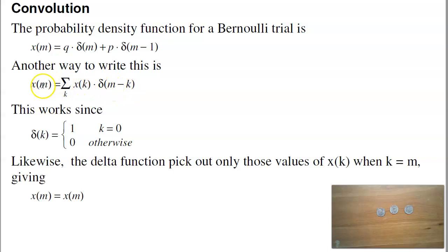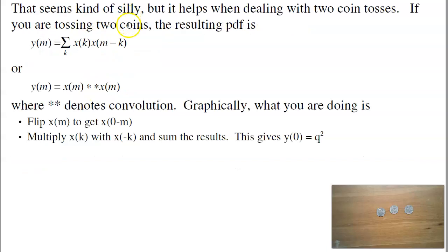The point behind that, though, is if I change that delta function to something else, I can now say what's the probability of getting n heads when I take a Bernoulli trial times a Bernoulli trial. This is convolution. This is written as star star. x convolved with itself gives the probability of rolling two, flipping two coins.